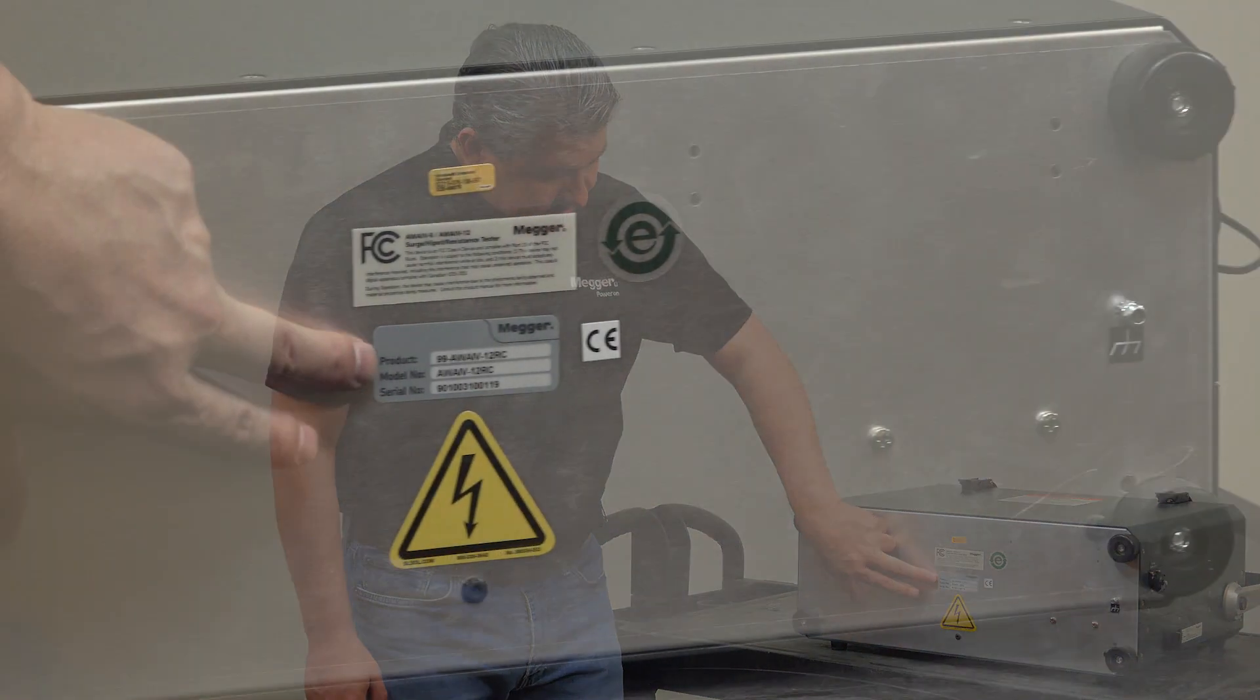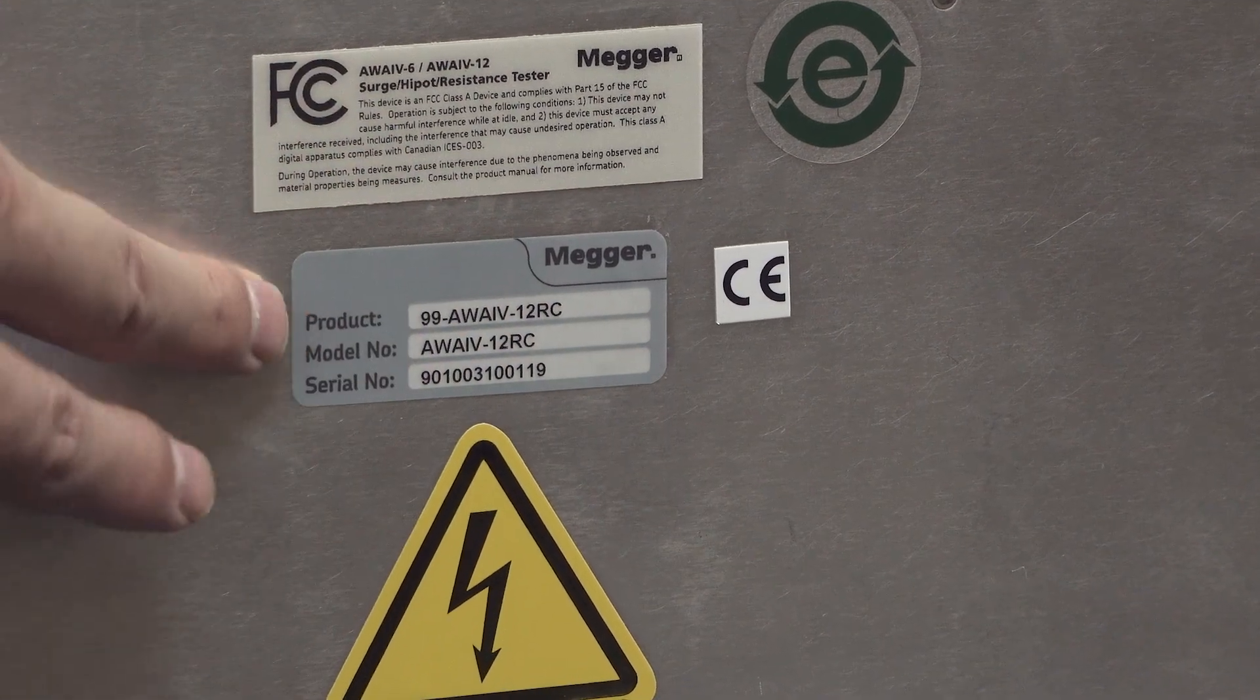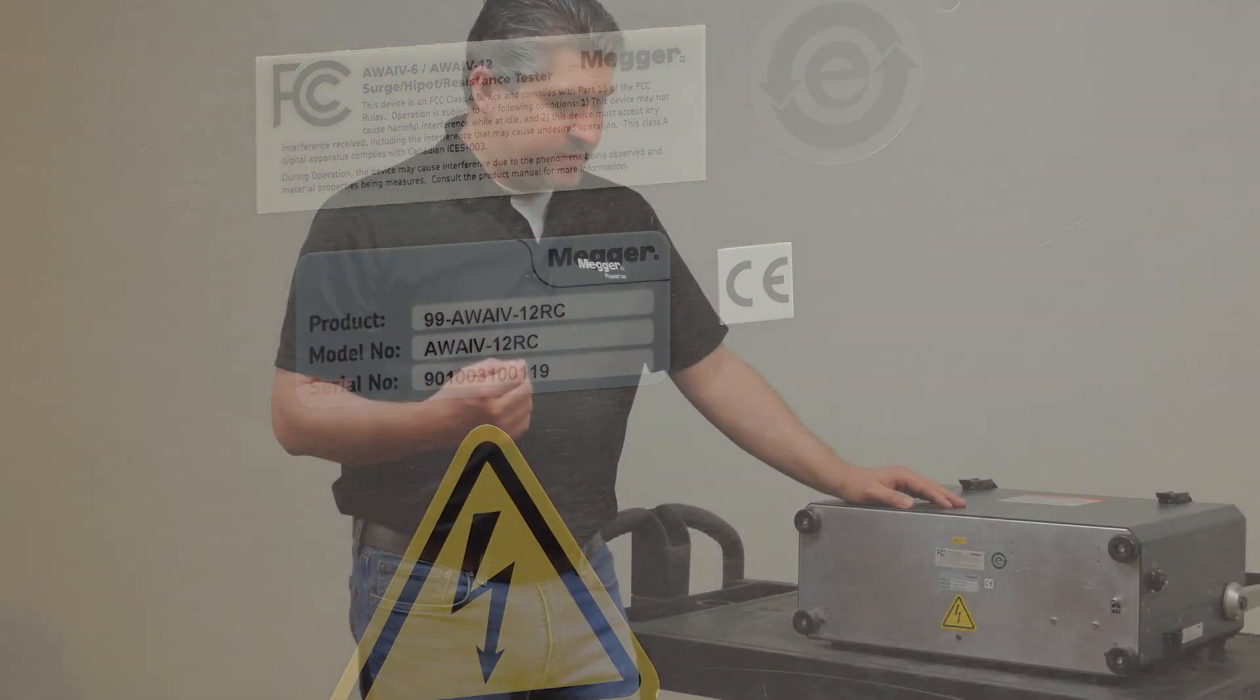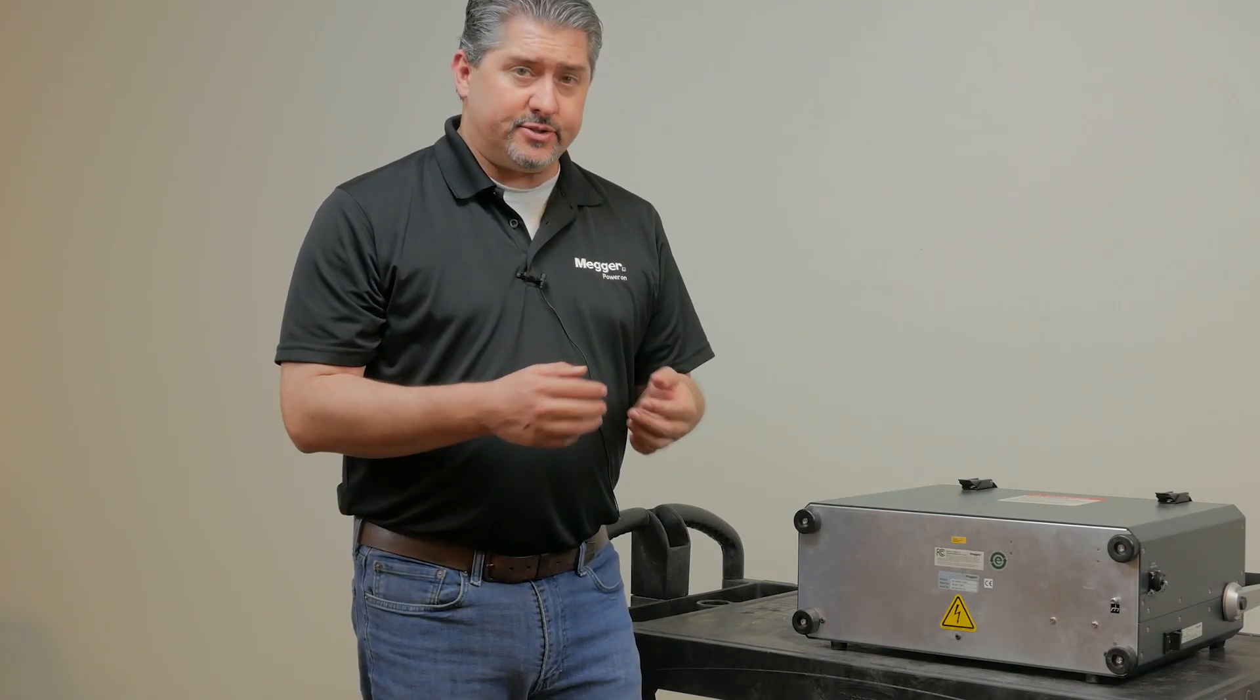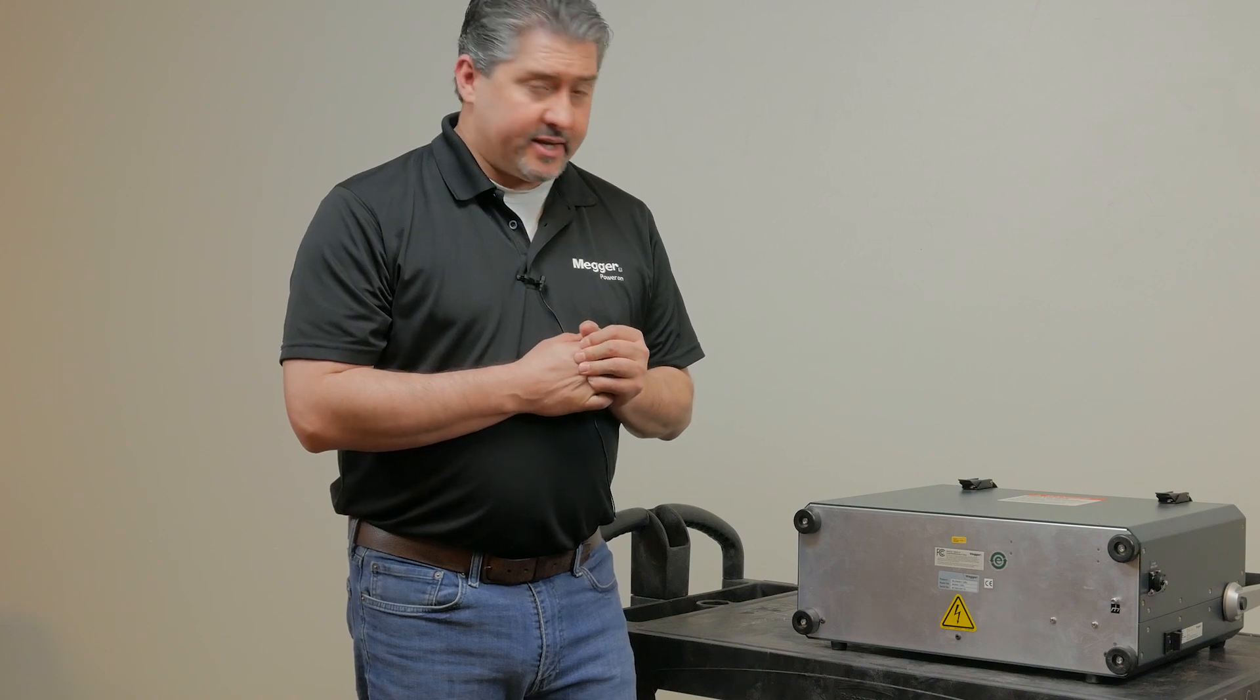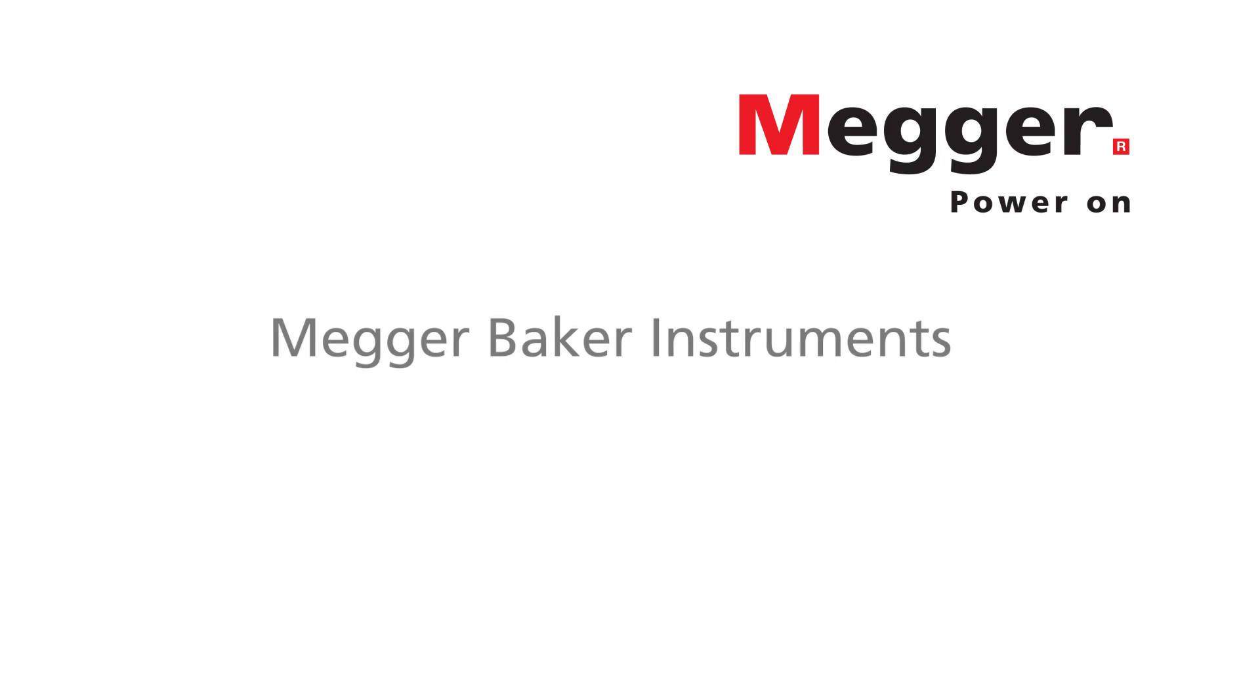And then finally, I wanted to point out the product name, model number, and serial number is located on the back of the unit. This information is very helpful. If you call into tech support, they'll need this information to properly address any concerns or issues that you might be needing assistance with.